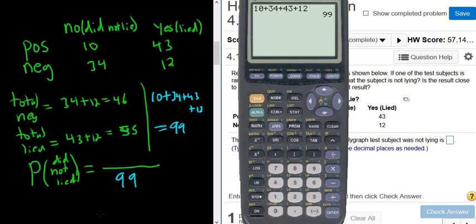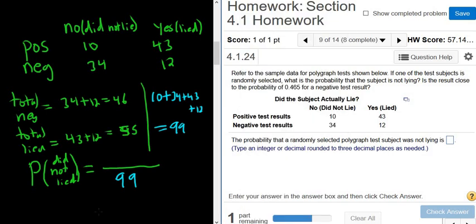So there are 99 total results. So there are 99 ways to pick a result. So the total always goes in the bottom. To figure out what goes on the top, all you have to do is figure out how many people did not lie. So you just go to did not lie, which is here, and then you just add up. Just look straight down. 10 plus 34 is 44.